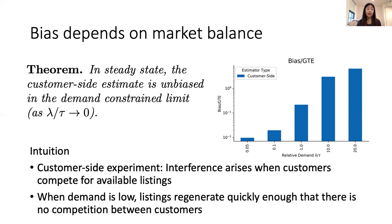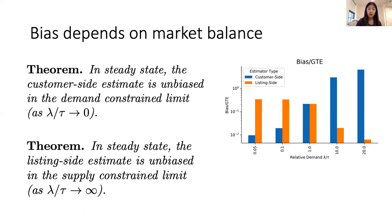It's natural to ask whether something similar happens with the listing-side experiment. We actually find the opposite: the listing-side experiment has higher bias when demand is low and lower bias when demand is high. We prove the theorem that the listing-side estimate is unbiased in the supply-constrained limit — the other limit where customer-side experiments actually have high bias. There is some clean intuition for this as well, but for the sake of time I'll skip over it.